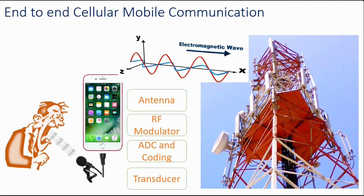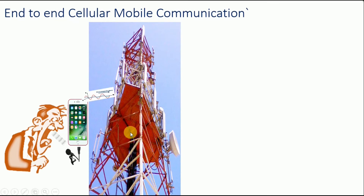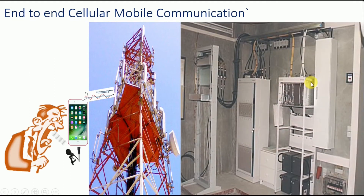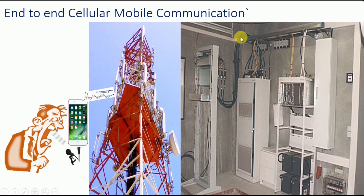These base transceiver stations can be observed on roadsides, rooftops, and other places. Note that this base transceiver station unit is just the outdoor unit. We also have an indoor unit. Coming back to the antenna, each antenna is connected with an IF cable, and that cable goes to the indoor unit. This indoor unit is basically installed inside a small cabin or room, where we have different cabinets with several equipment installed. Since all of these are active units, we have rectifiers and battery banks ensuring the power supply.